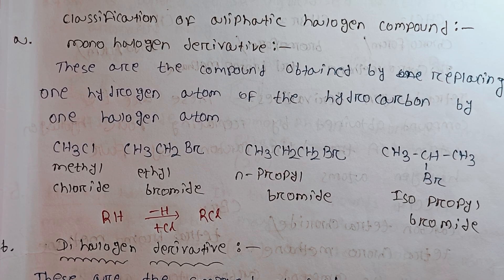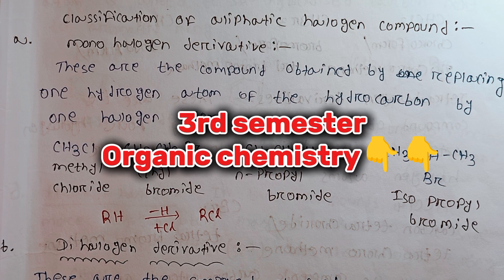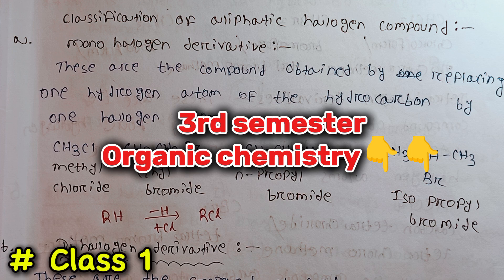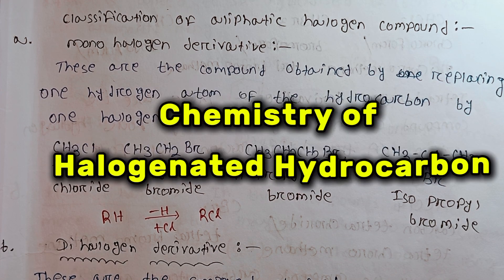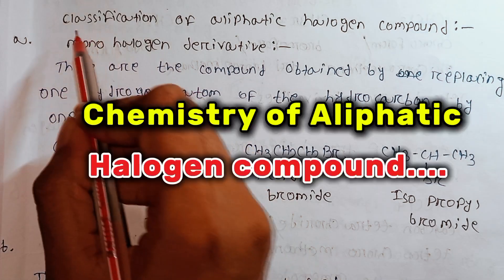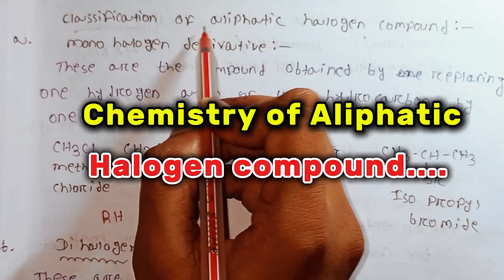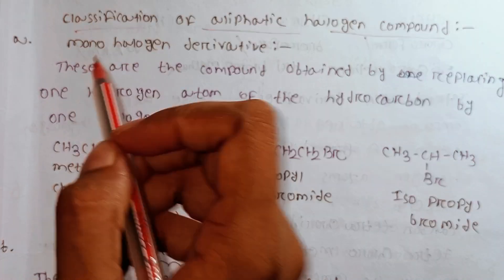Hello everyone, welcome to Cambridge. In today's video, the third semester of organic chemistry class starts. The first topic is chemistry of halogenated hydrocarbons. The first topic is classification of aliphatic halogen compounds.